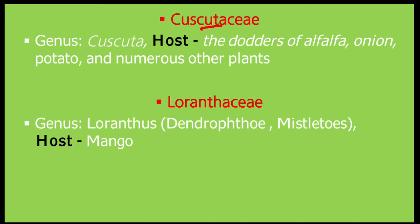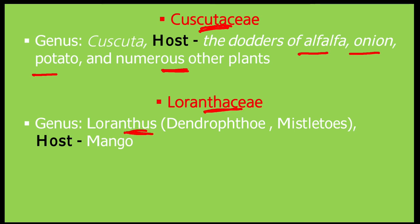Cuscuta belongs to family Cuscutaceae. Its hosts include alfalfa, onion, potato and other plants — Amarbel has a very wide host range. Loranthus belongs to family Loranthaceae.